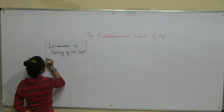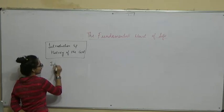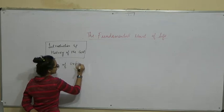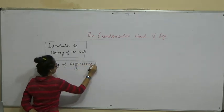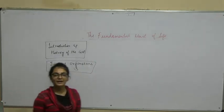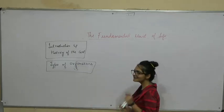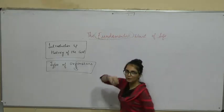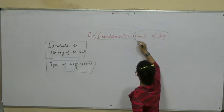Uske baad we are going to start with types of organisms — cell ke basis peh kitne type ke organisms hoti hain, un peh baat kareenge. Sabse pehle hume is chapter ke naam ka matlab samajhna hai. As you can see, chapter ke naam mein humare paas do words hain.